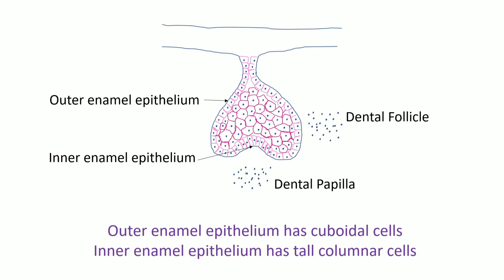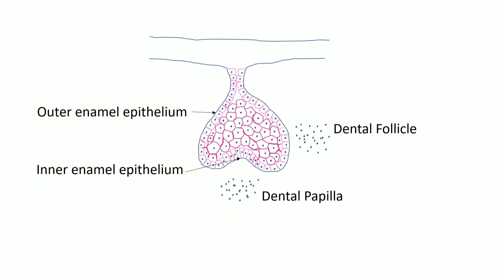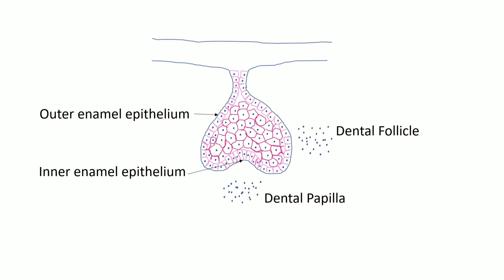Cap stage. In cap stage, unequal growth in different parts leads to the cap shape. This includes the outer enamel epithelium and inner enamel epithelium. Outer enamel epithelium has cuboidal cells and inner enamel epithelium has tall columnar cells. Enamel knot, enamel cord, enamel septum, enamel navel, and enamel niche are formed as transitory structures which later disappear in the next stage of tooth development.